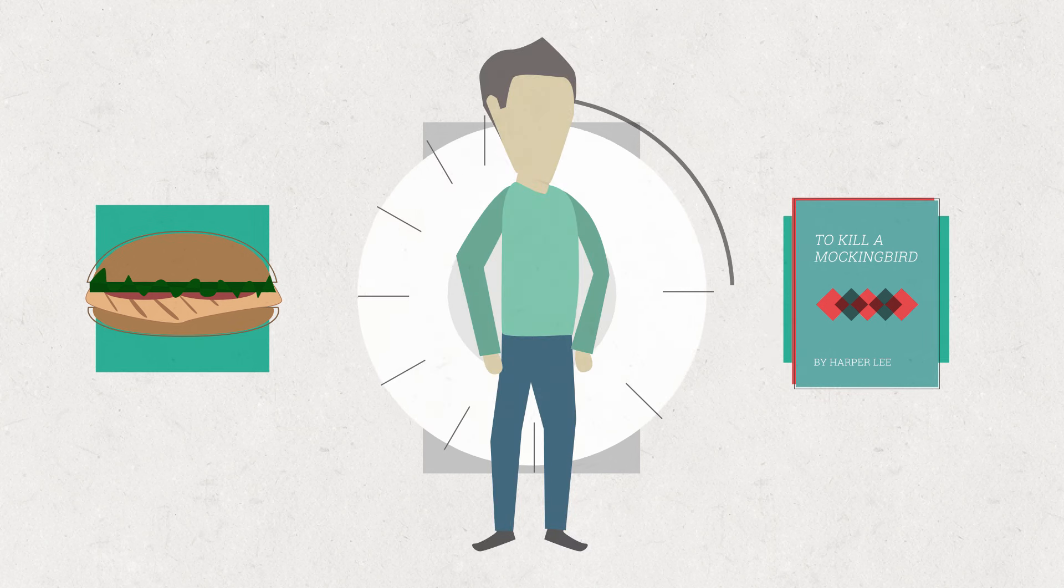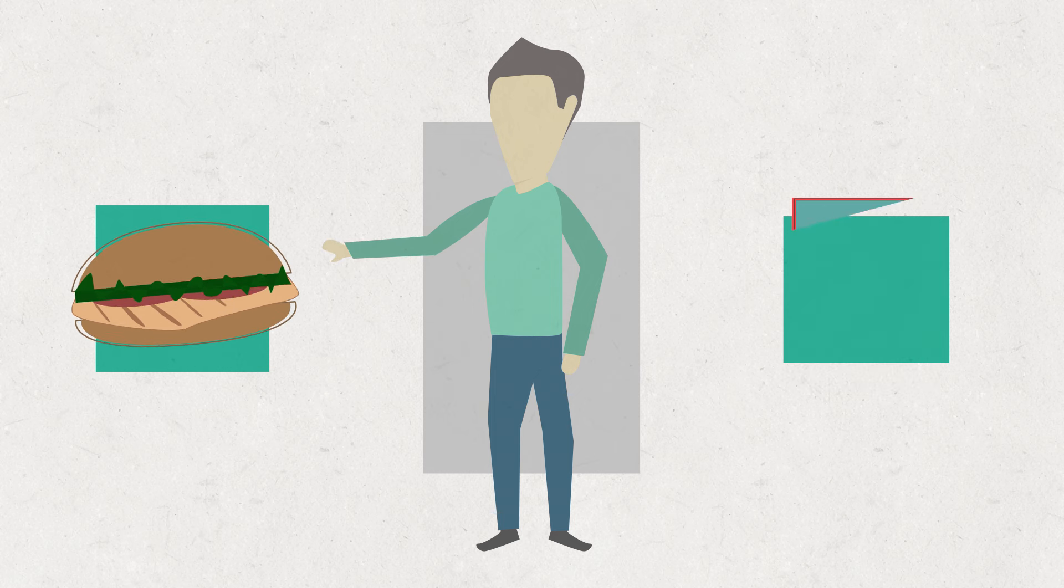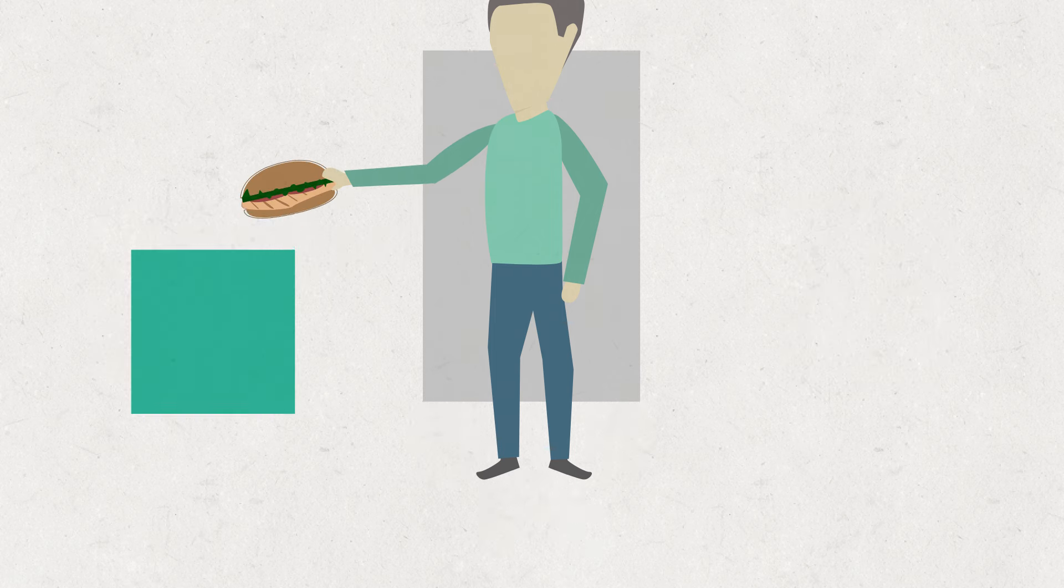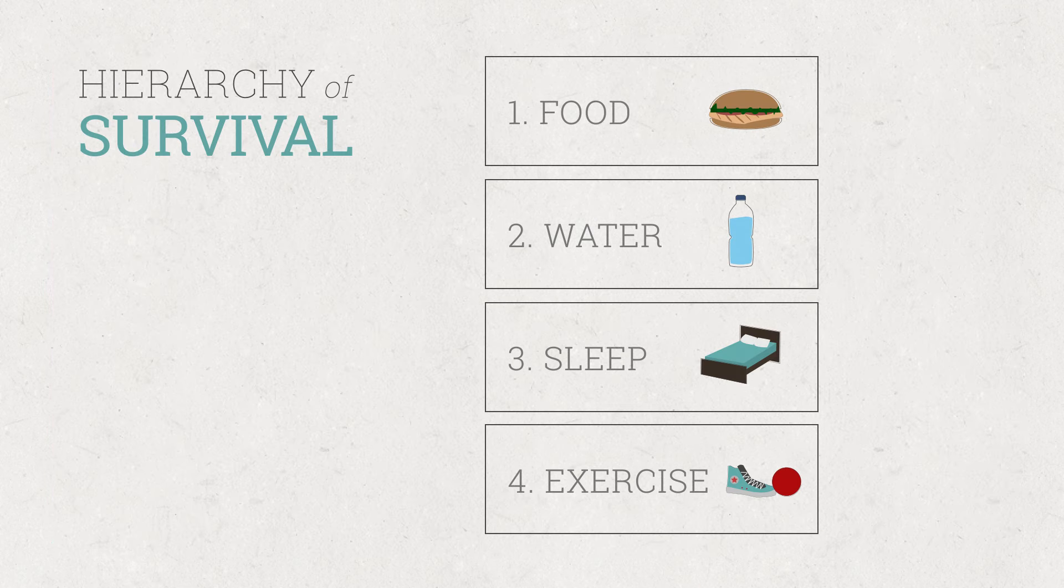So if you go two days without reading a book, or two days without eating food, your body is going to crave the food over the book. As such, your brain creates what's called a hierarchy of survival, which ranks how important each of these things is to your survival.